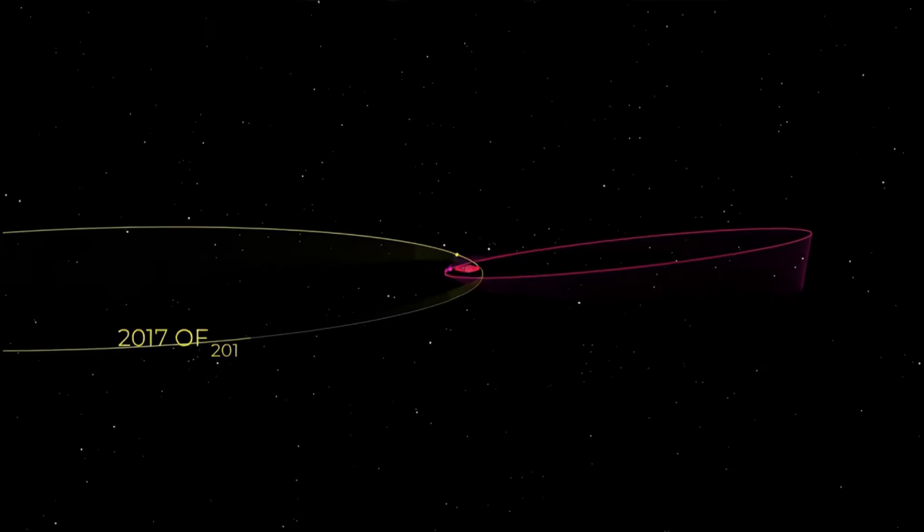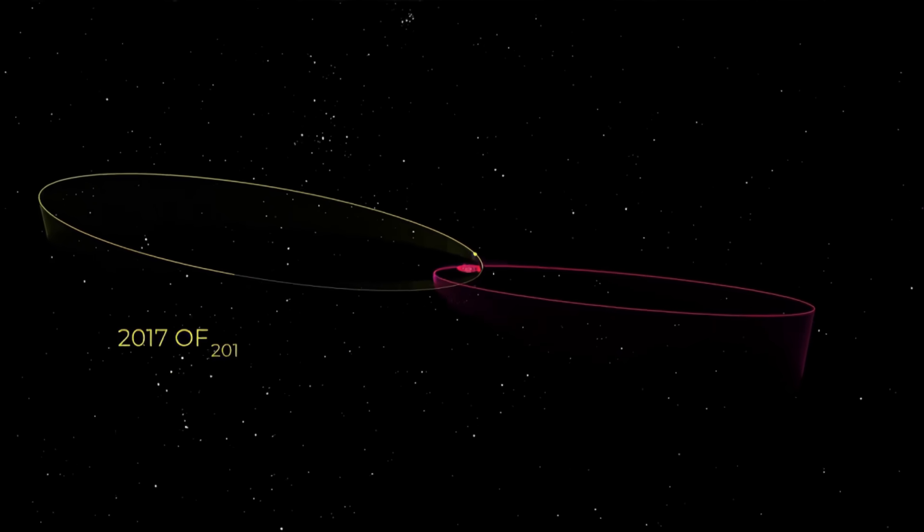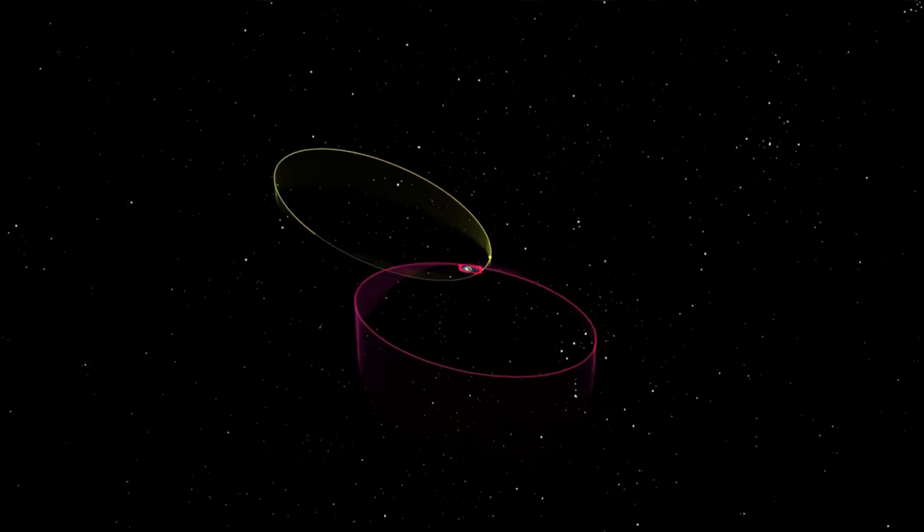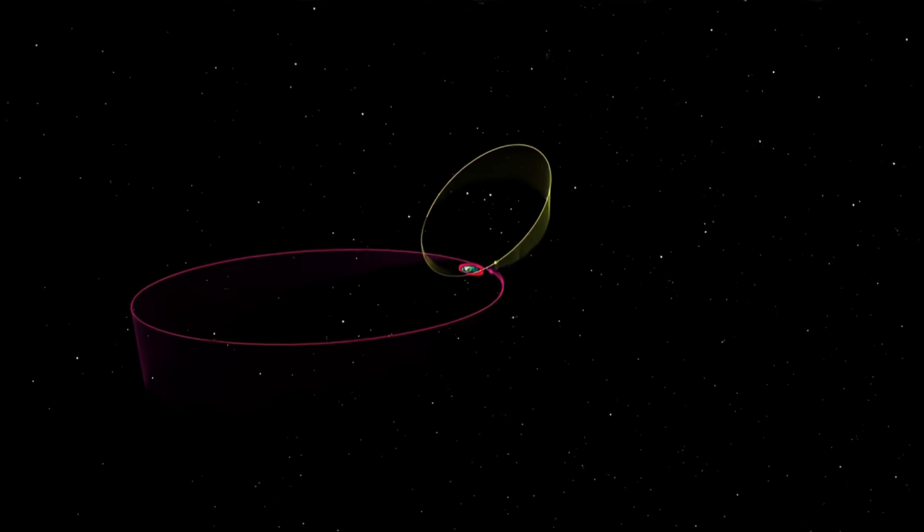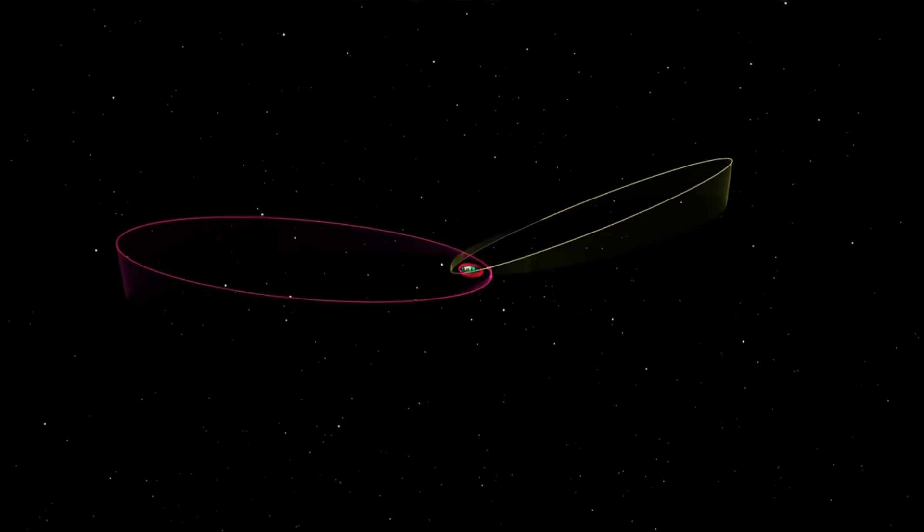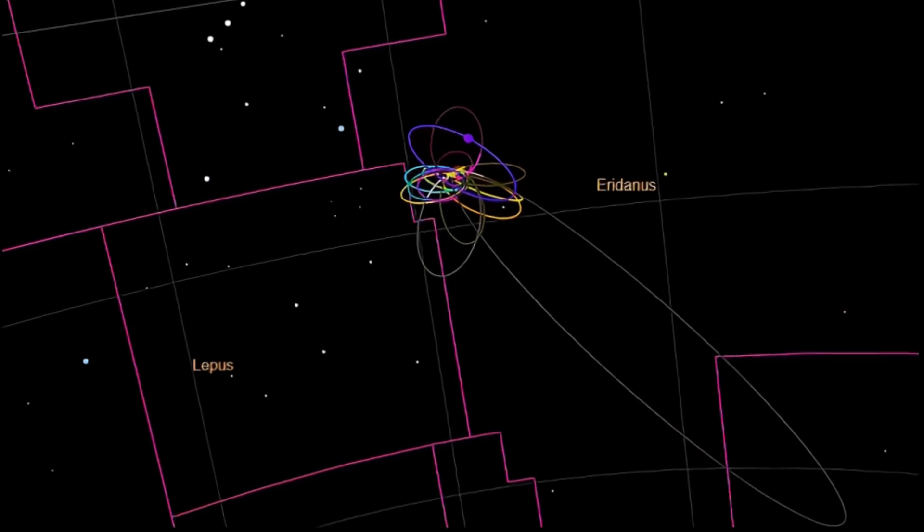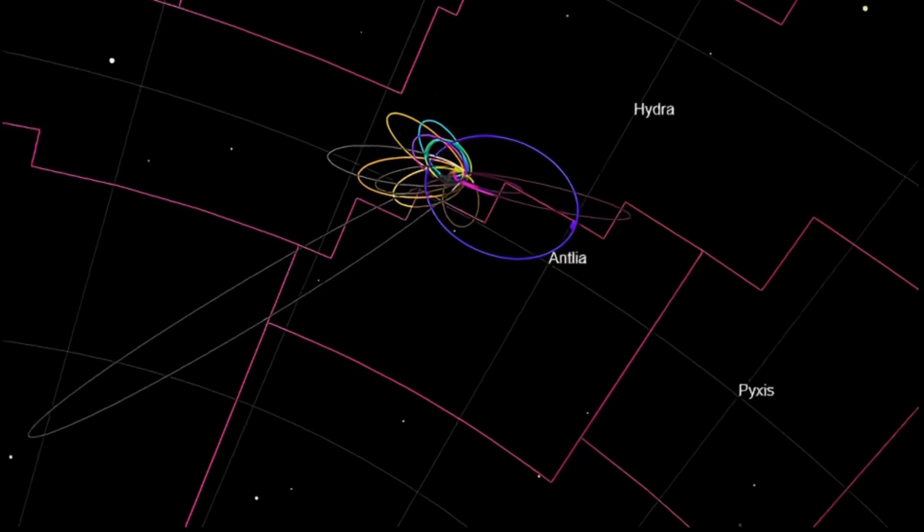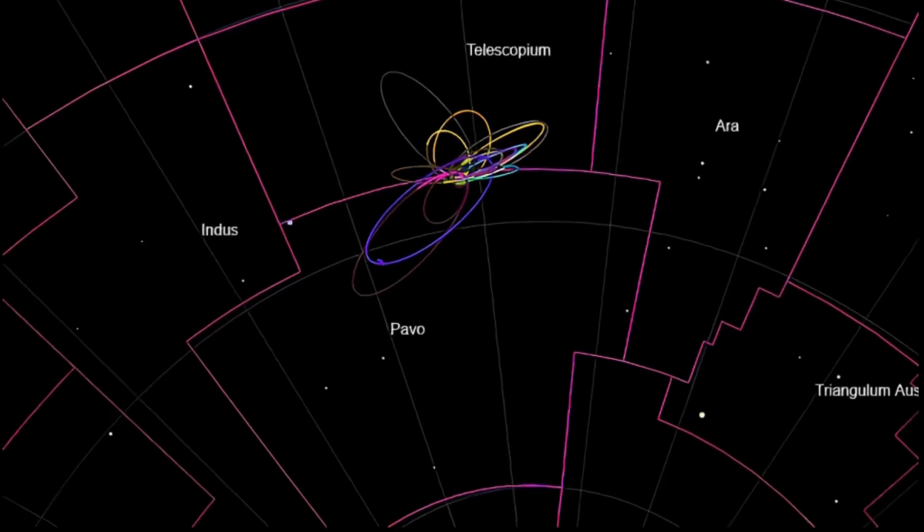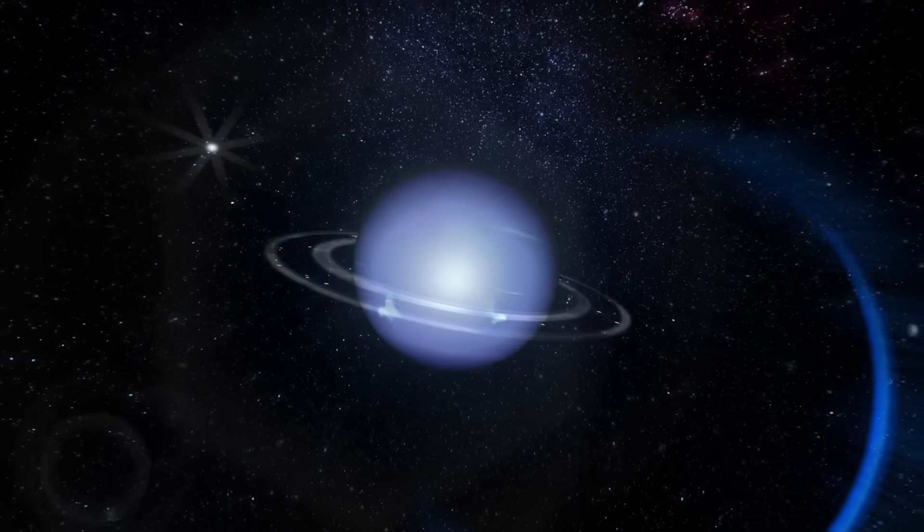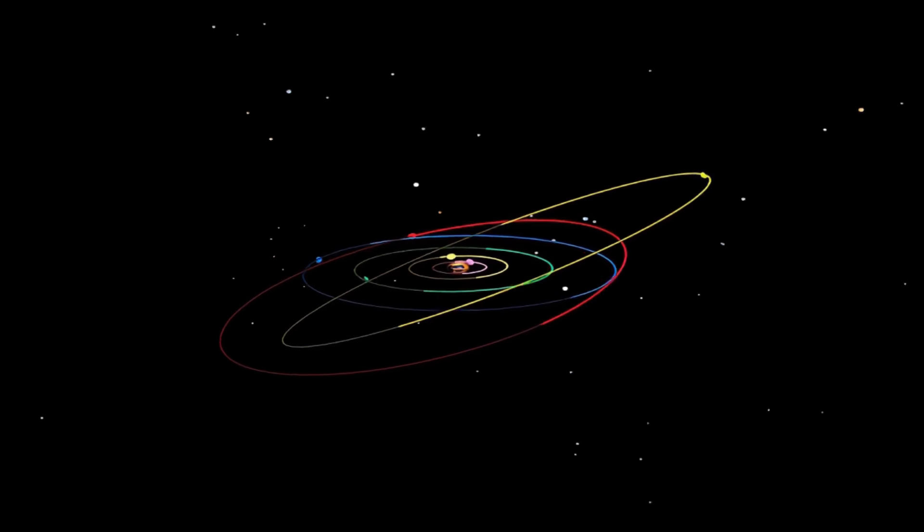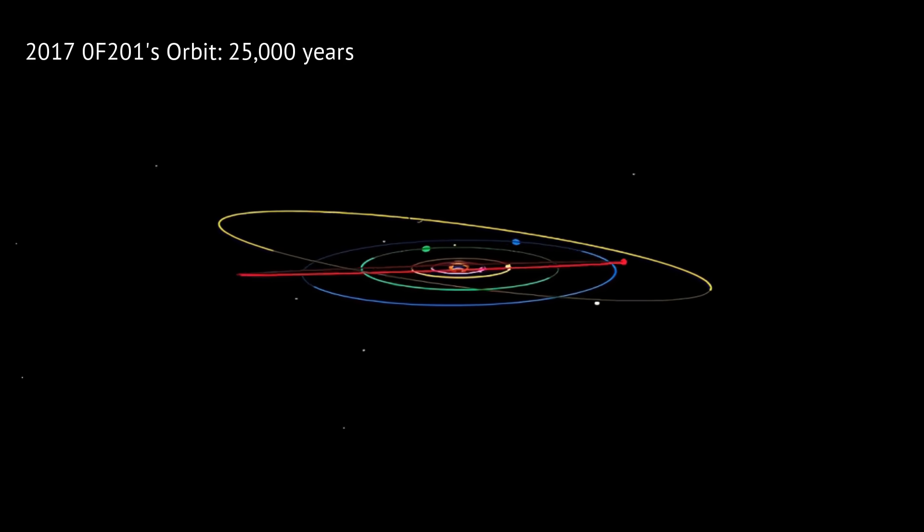2017 OF 201 travels in a long elliptical path around the Sun. At its closest, it comes in at about 44.5 astronomical units, just a bit beyond Pluto. But at its farthest, it swings out past 1600 astronomical units. For scale, that's over 50 times farther than Neptune, and one orbit takes about 25,000 years.